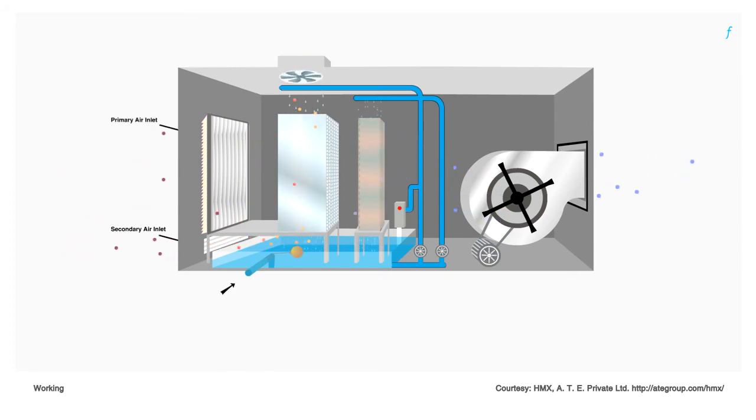Outside air is allowed to pass through the primary and secondary air inlets. The primary air inlet has louvers and filters since air passing through this is going to be treated and delivered to the occupied spaces. Air from the two inlets never interact directly with each other.